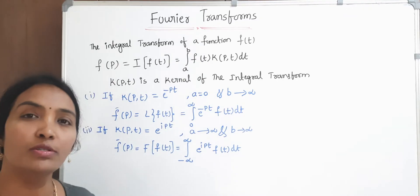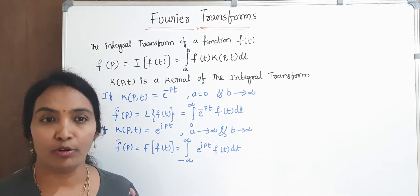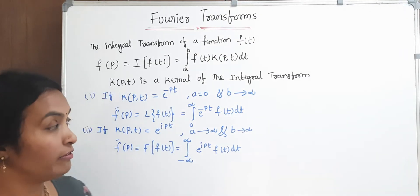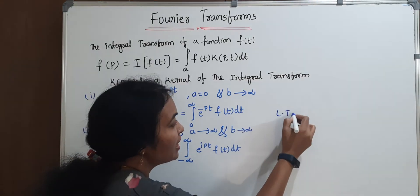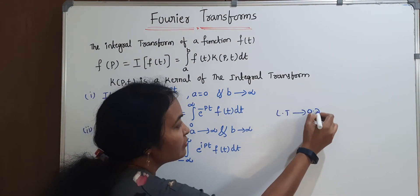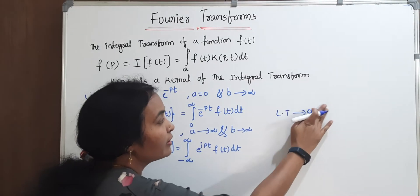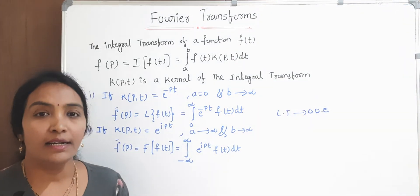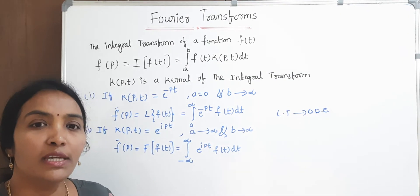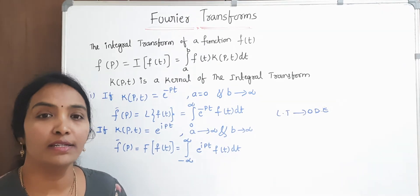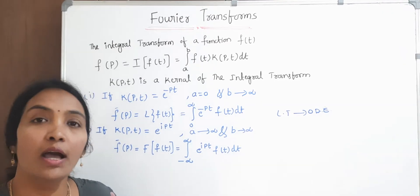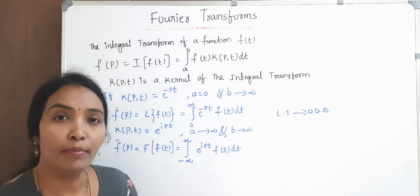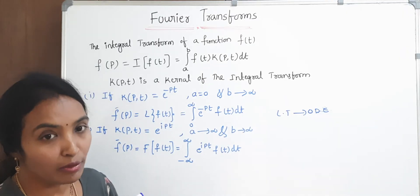Laplace transforms is the most important integral transform in engineering and it is used to solve ordinary differential equations. By using the Laplace transforms, we are solving ordinary differential and partial differential equations. Fourier transforms is also an integral transform, and it finds its applications in solving partial differential equations. Where we can use the Fourier transforms? In solving partial differentiation, we are using the Fourier transforms.